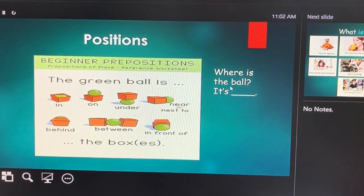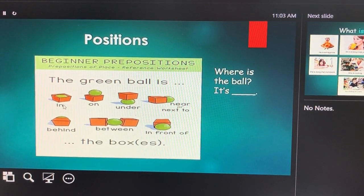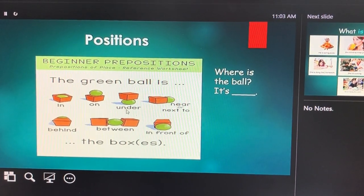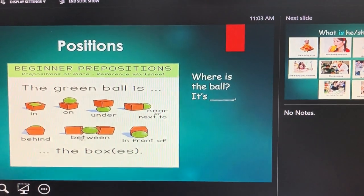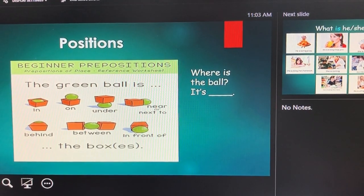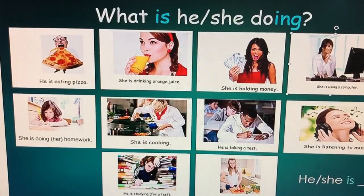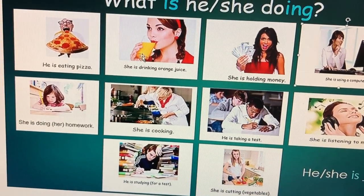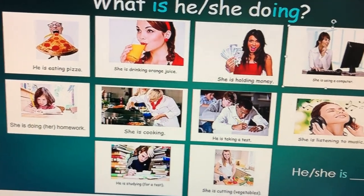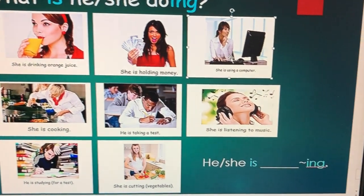Positions. Where is the ball? It's in the box, it's on the box, it's under the box, it's next to the box, it's behind the box. I'm going to leave these two out for now. What is he or she doing? Look at this funny one.